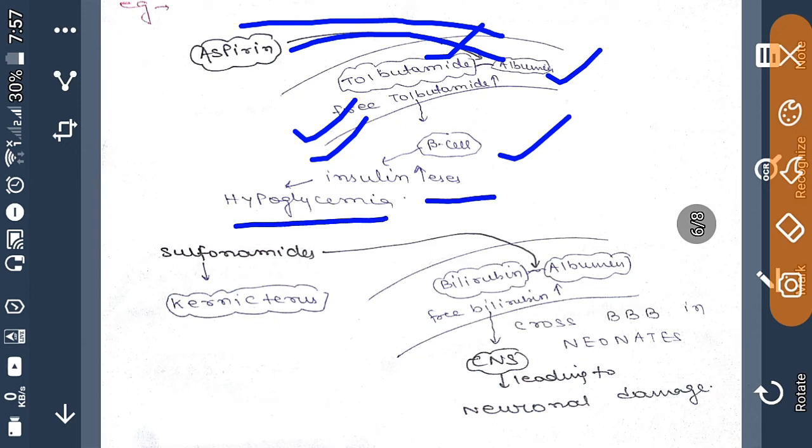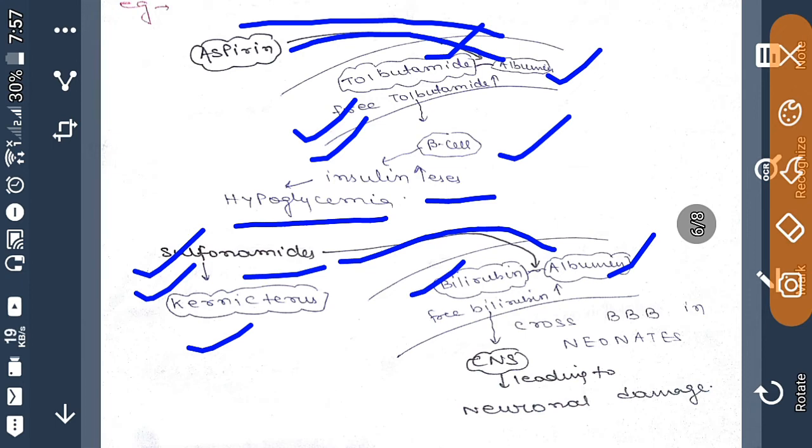One more example, very important from clinical point of view: administration of sulfonamide, which can cause kernicterus in infants. Usually bilirubin binds to albumin. If you give sulfonamide to that neonate, then this sulfonamide will bind to albumin. Then amount of free bilirubin will increase and this can cross blood-brain barrier in neonates.